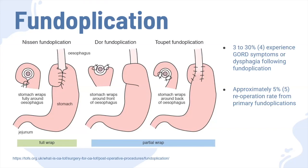There are three main approaches mainly used for fundoplication. The most common is the Nissen, which is a 360-degree wrap where the fundus of the stomach fully wraps around the esophagus. Then there's the Toupet, which is a 270-degree wrap, and the Dor, which is 180 degrees.